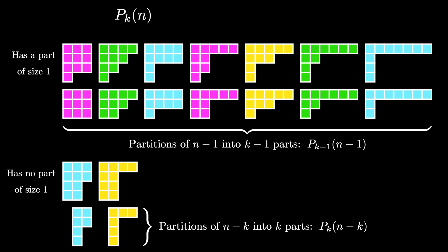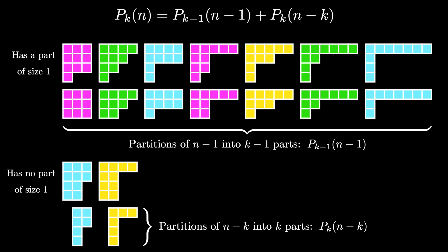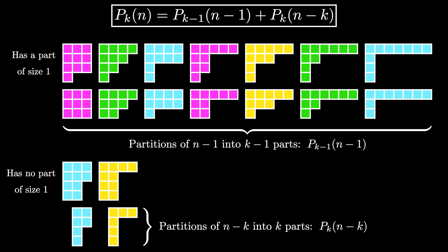Both of these processes are reversible, and because the two sets have no elements in common, we see that p sub k of n is equal to p sub k minus 1 of n minus 1 plus p sub k of n minus k. This is a recursive formula for p sub k of n, the number of partitions of n into k parts.